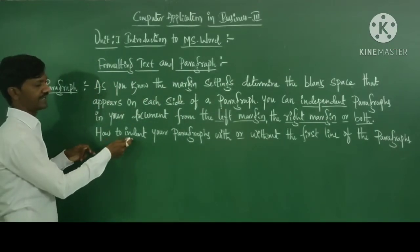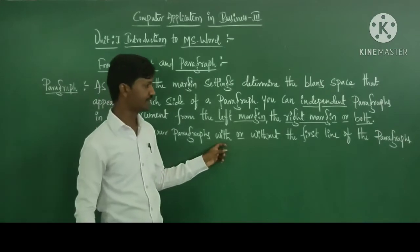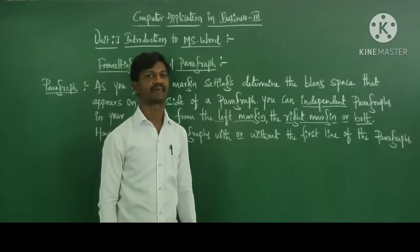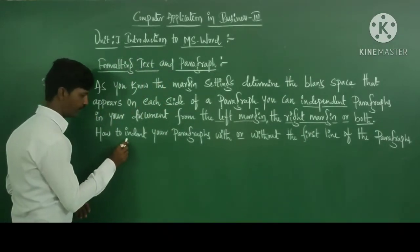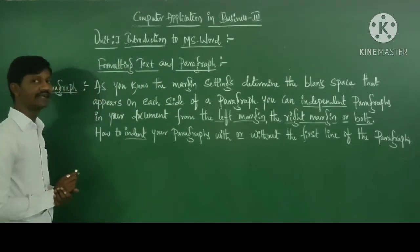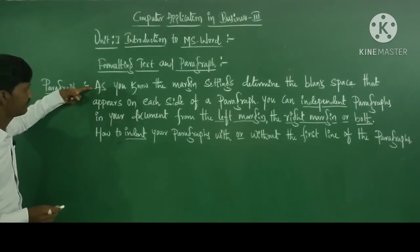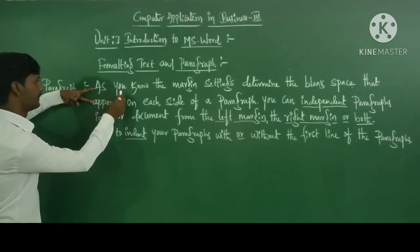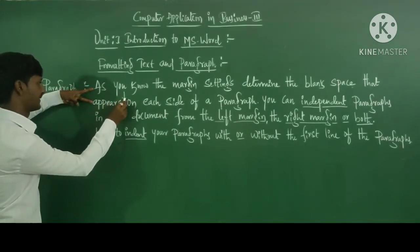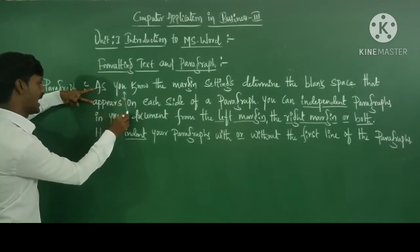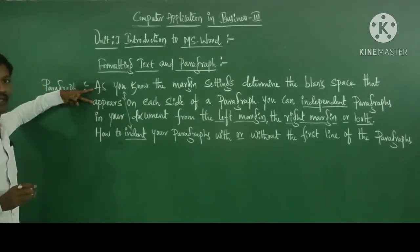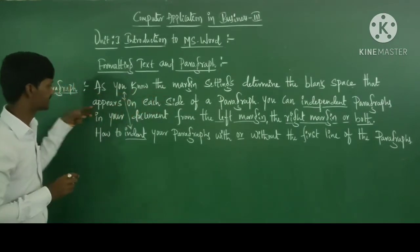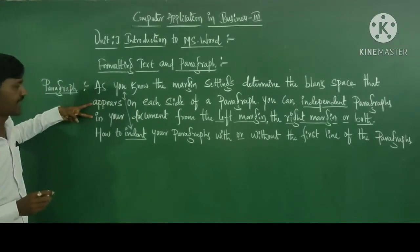How do you indent your paragraphs, with or without the first line of the paragraph? Here one word is there: indent. Indent means this is the first line and this is the second line, and in between there is some space. That space is considered as indent. Sometimes there is only one line, sometimes a second line or third line.